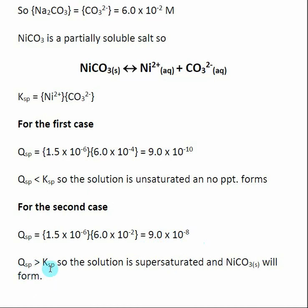In this case now when I compare Qsp to Ksp, the Qsp or ion product is larger than Ksp. That means that the solution is supersaturated and nickel two carbonate solid will start to precipitate out of this solution.